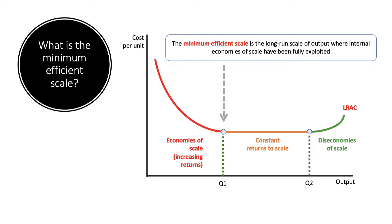In other words, it's when increasing returns turns to constant returns and the average cost of production in the long run is at a minimum point — typically a level of output where you're within about five percent of the minimum feasible unit cost. For example, Q1 would be the minimum efficient scale, where you've more or less reached the lowest point of the average cost curve. At Q2, the average cost is pretty much the same; there's no significant cost advantage from scaling from Q1 to Q2.